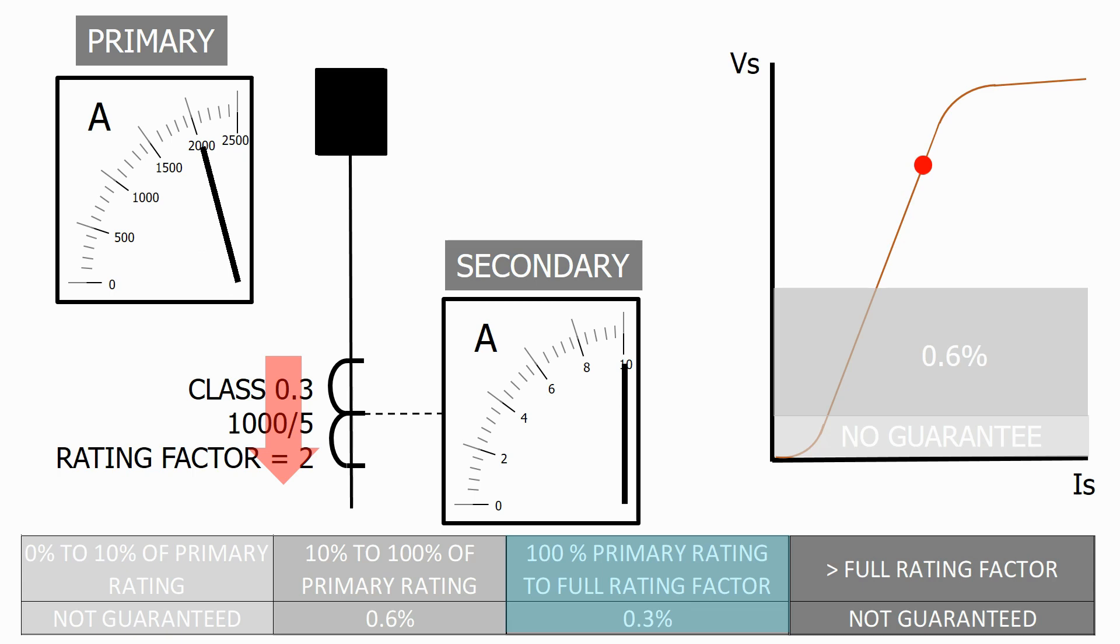From 100% of the primary rating to the full rating factor or from 1000 amps to 2000 amps we can guarantee the CT error will be less than plus or minus 0.3% of the value it should be as per the CT ratio.